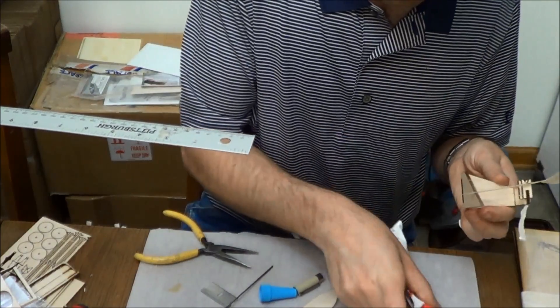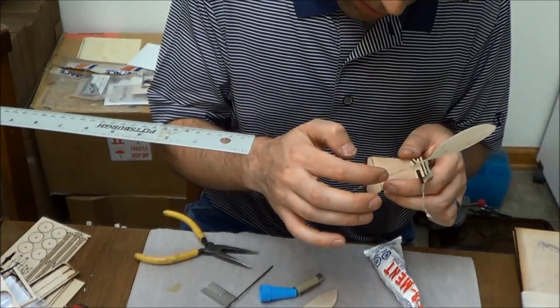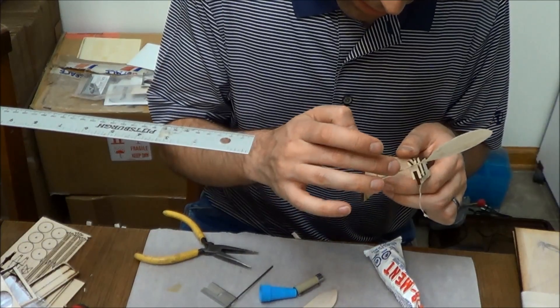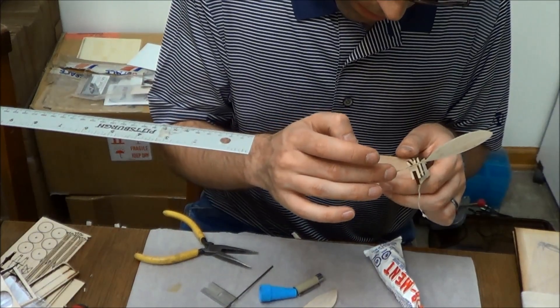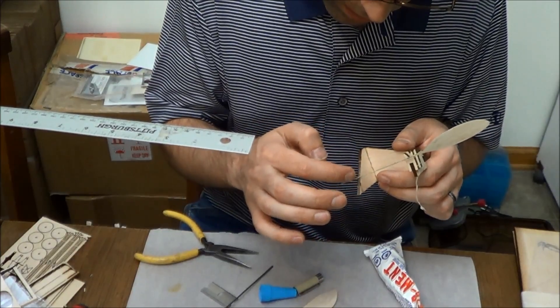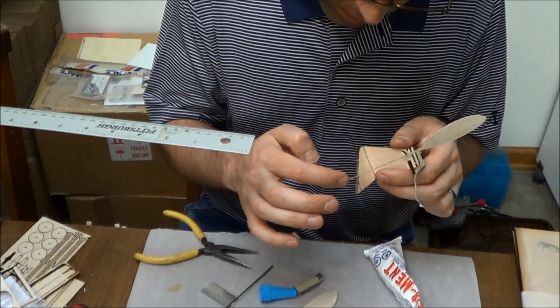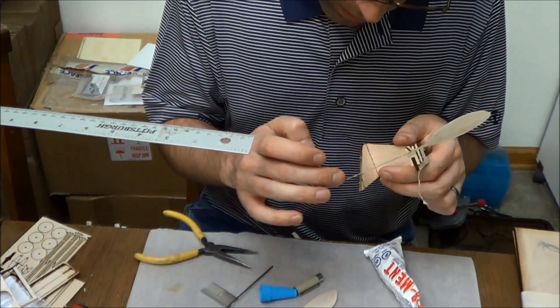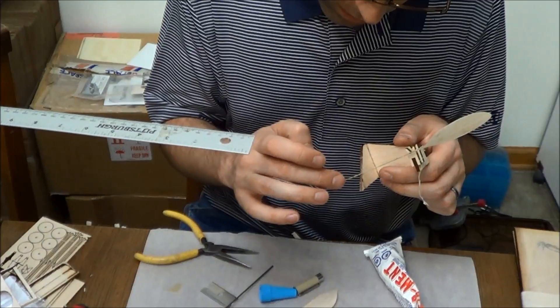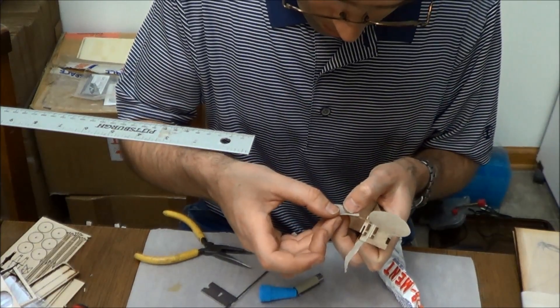And to control the amount of glue, because I don't want too much, I'm again just dabbing. And that's actually more than I wanted. There we go. And now I'm going to stick this prop on here.